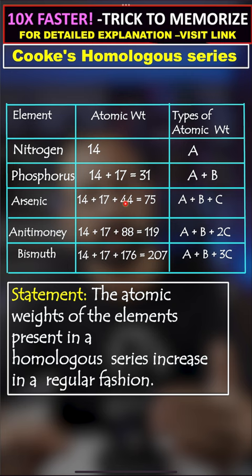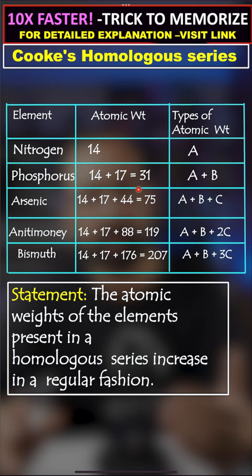Antimony will be A plus B plus 2C, meaning double of 44. And similarly, bismuth will be A plus B plus 3C, triple of 44. The limitation of Koch's homologous series was that it was not applicable to every element.